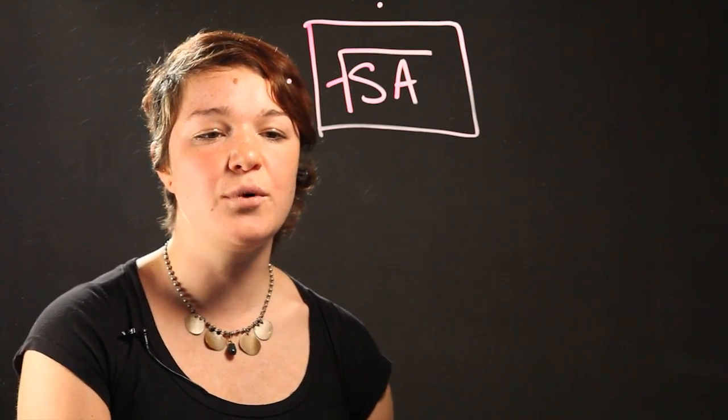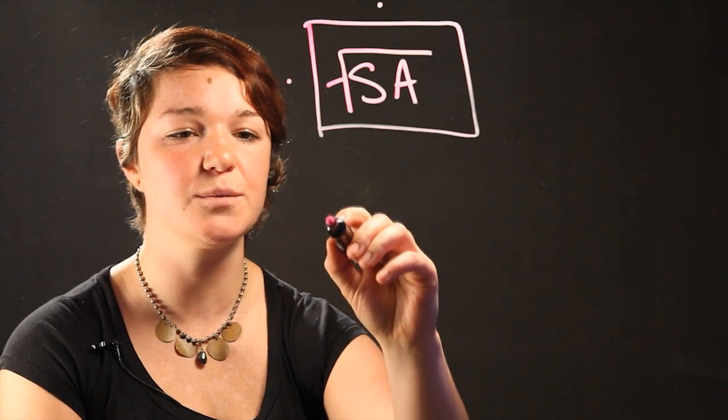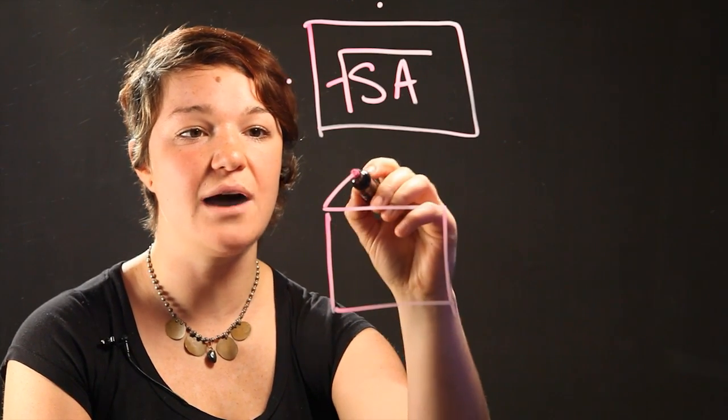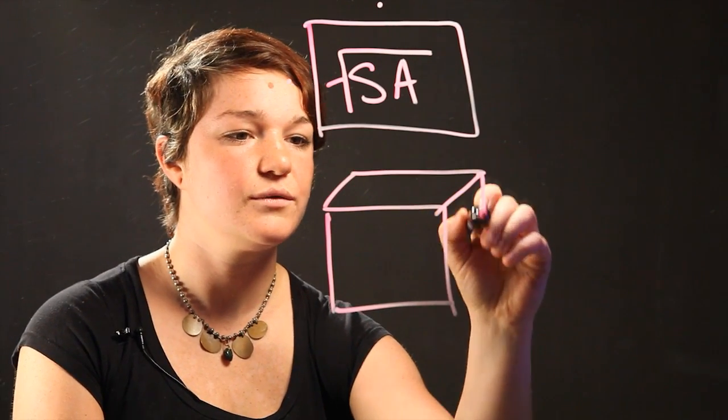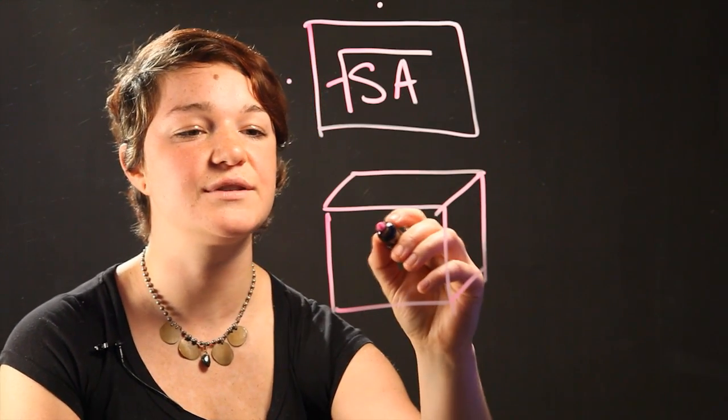We can make this example slightly more difficult, and let's say we have something with a volume. We'll have a cube. So let's say you want to build a house, for example, and the house is going to have a certain volume.